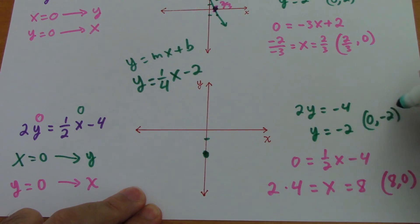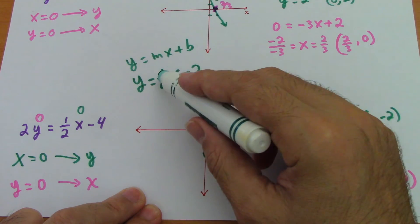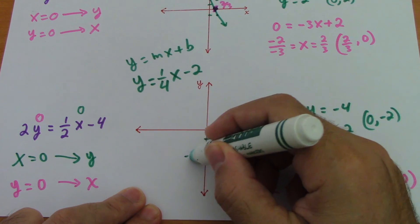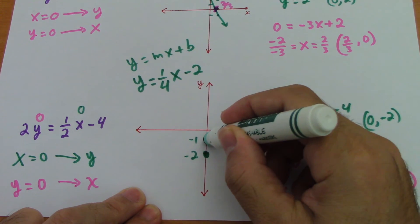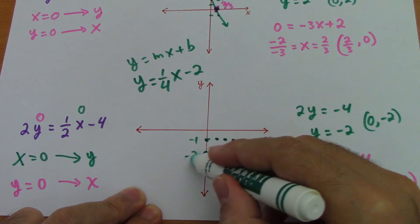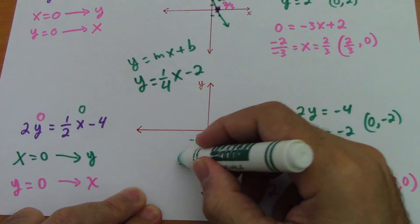As we have here, 0, negative 2. This is negative 2, this is negative 1. So 1 up and 1, 2, 3, 4 right. This is the other point. This is the line.